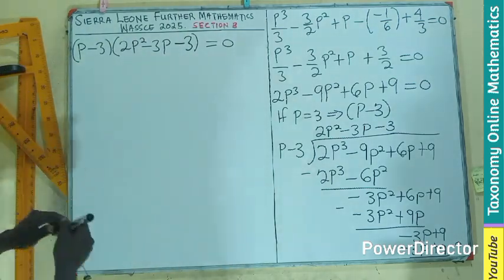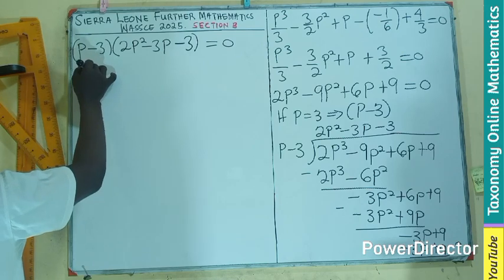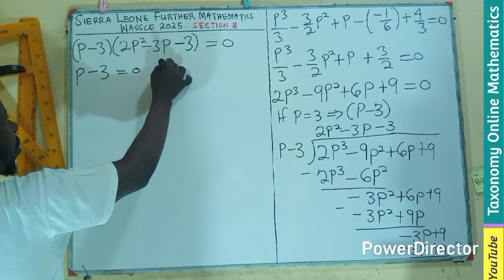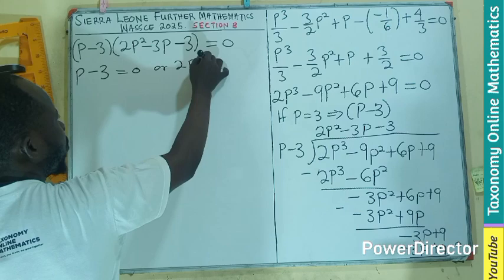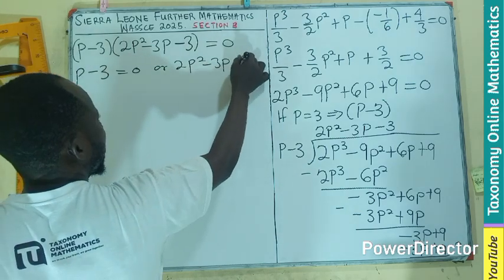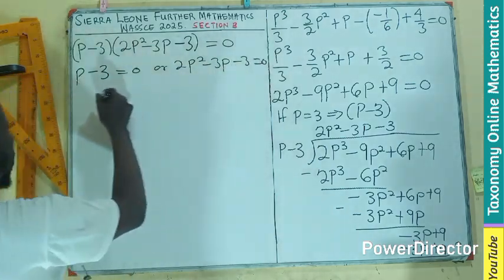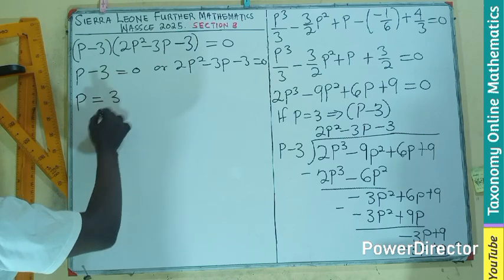Right from here, we can easily say that our equation becomes (p minus 3) multiplying (2p squared minus 3p minus 3) equals 0. So we are picking the first part, as in p minus 3 equals 0, or 2p squared minus 3p minus 3 equals 0. Here, p will be equal to 3.